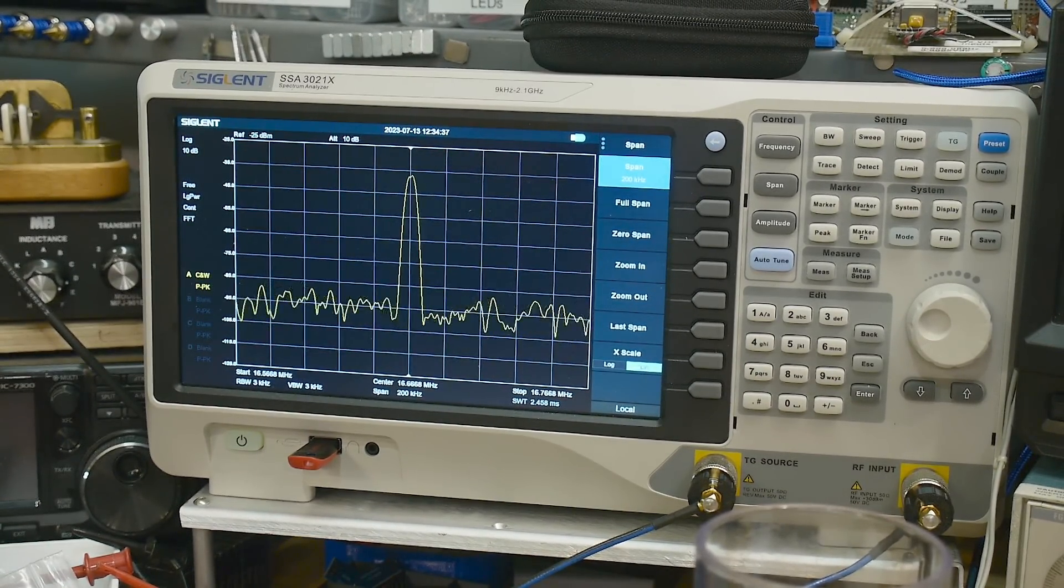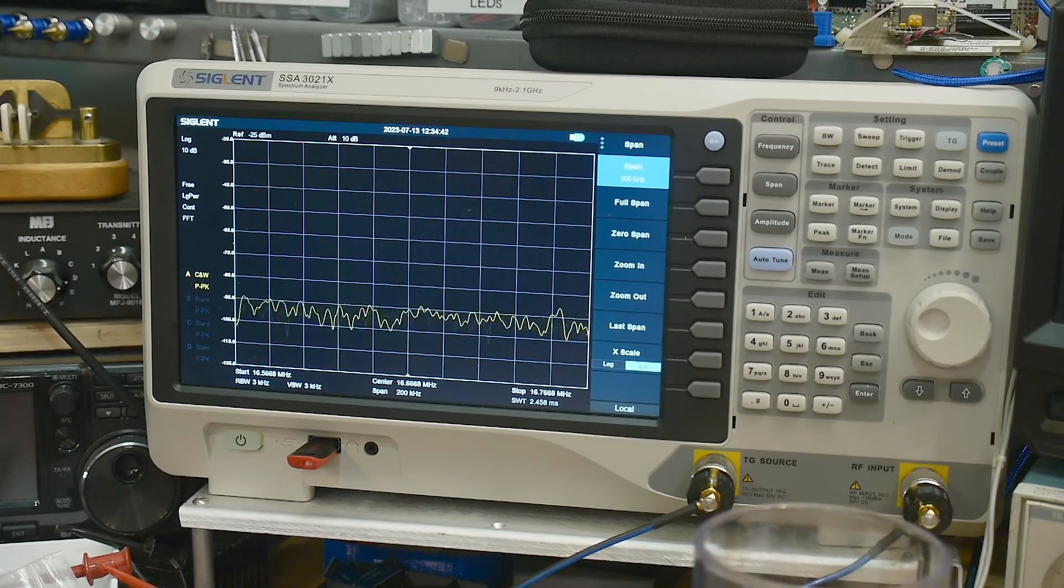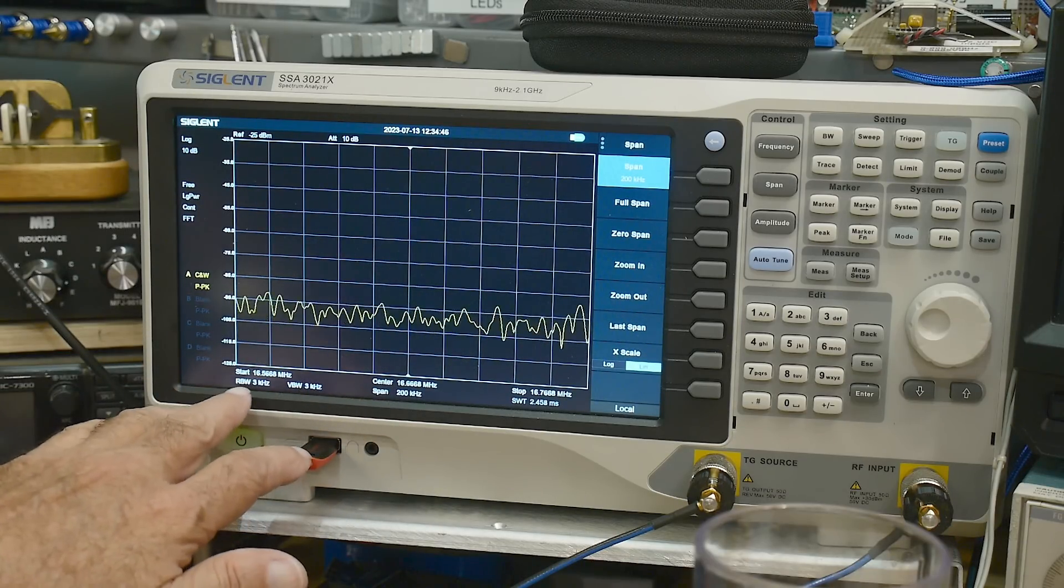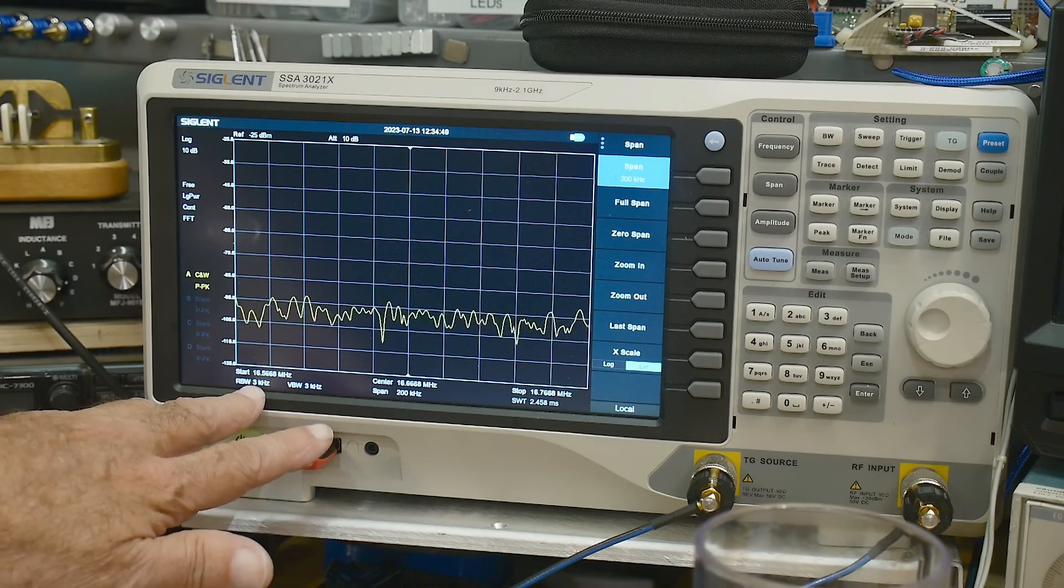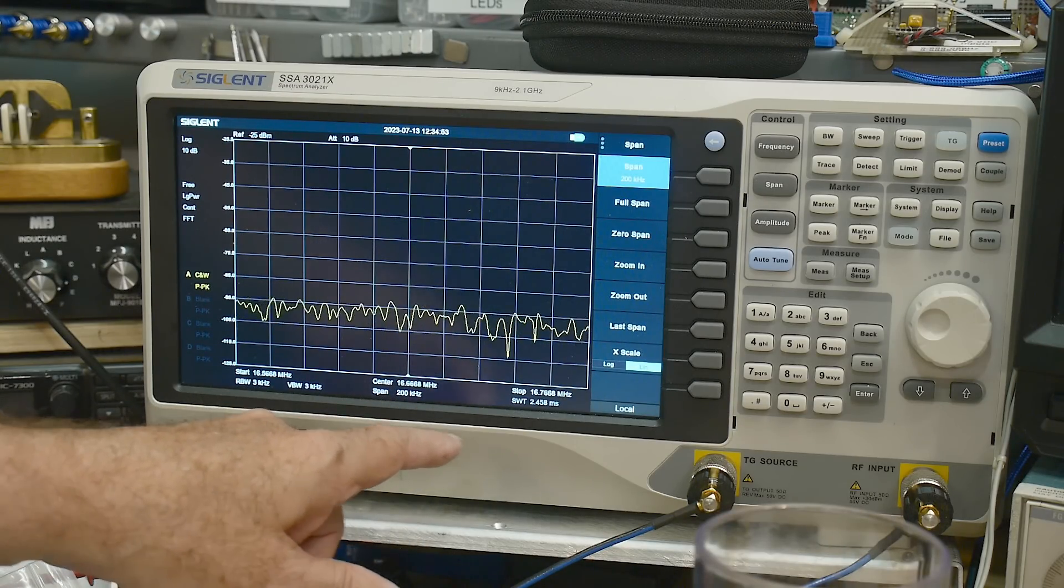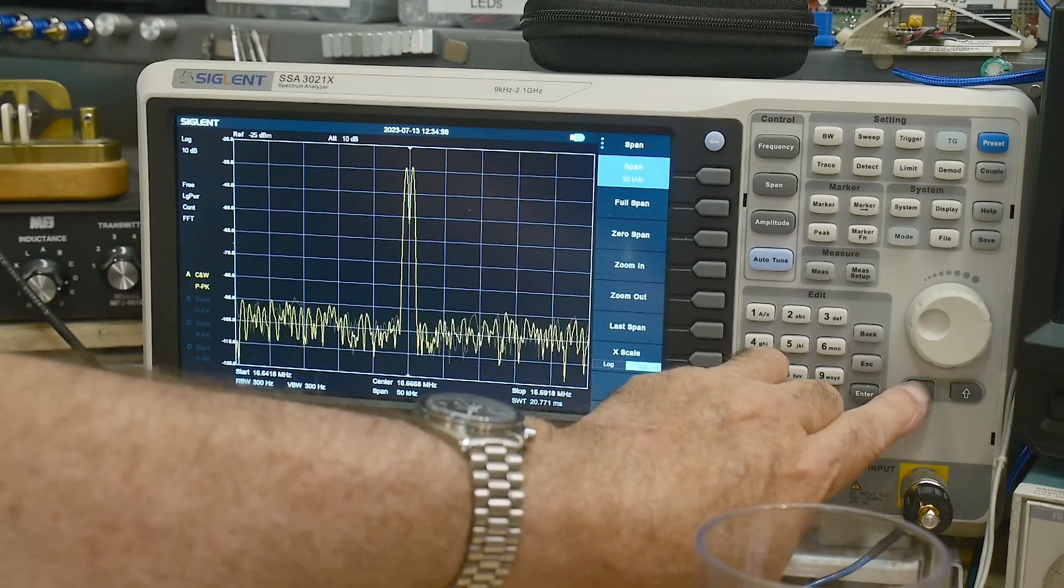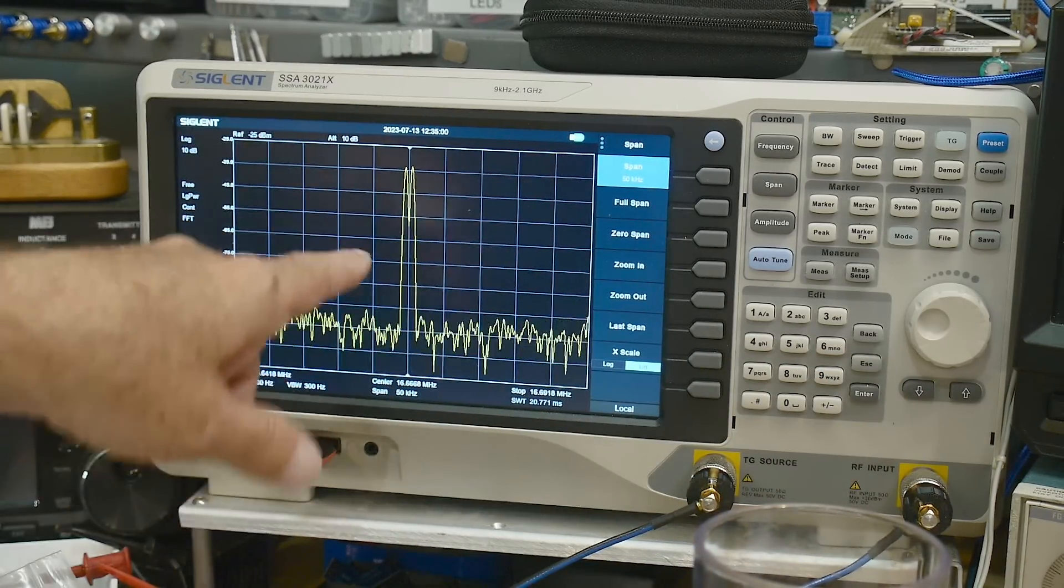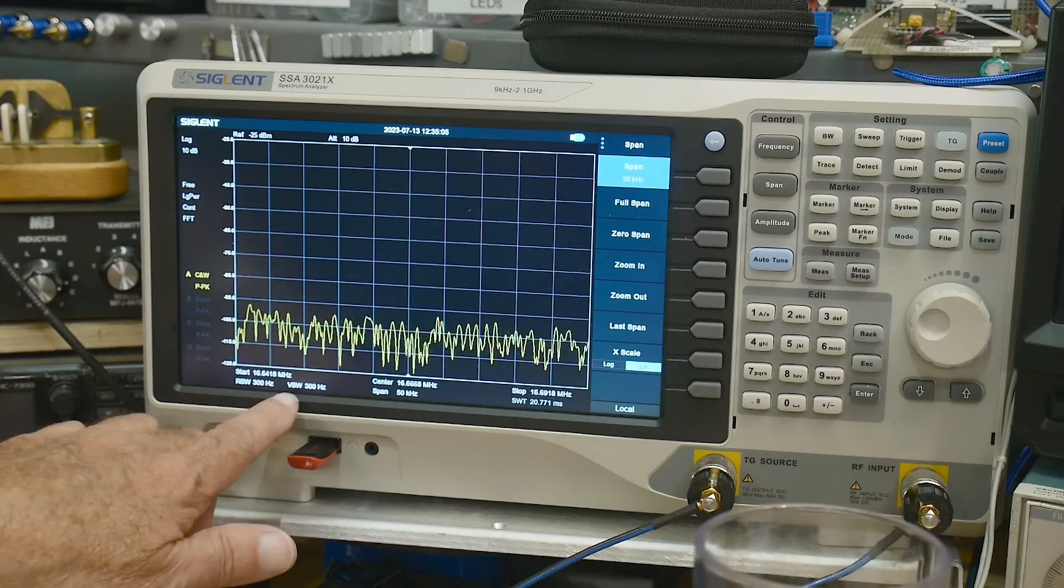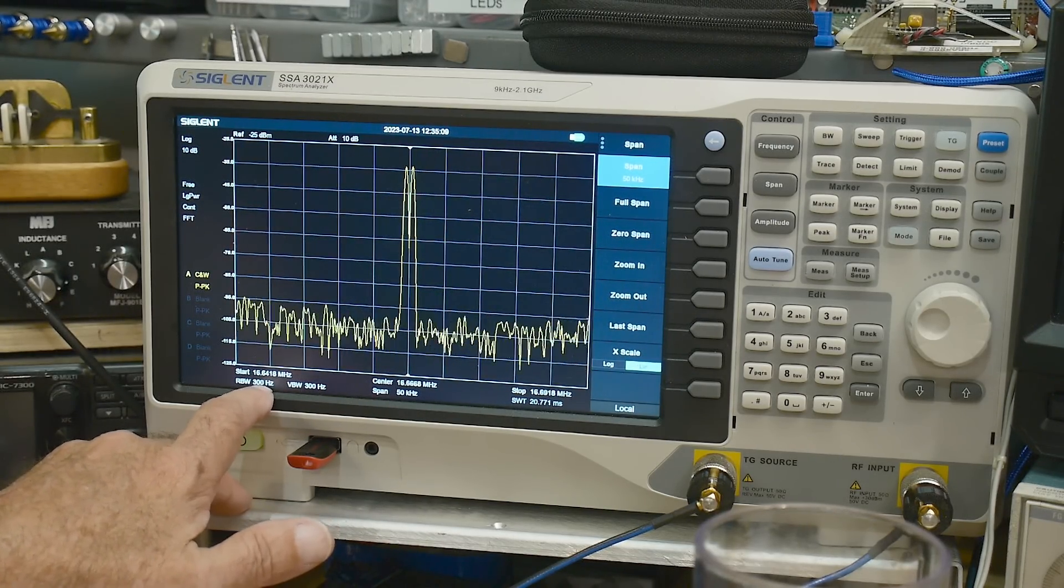So when I push the button, boom, you see a signal and you say, oh well, that's not a very good signal. I'm not resolving anything. Well, right now, our resolution bandwidth is 3 kilohertz. So that's not going to be able to see anything. So I have the center at 16.666. And then if I hit the span button, I can zoom in on it. And there, I'm just starting to resolve it. You can see that I now have two peaks instead of one peak. And that's happening when I have a resolution bandwidth of 300 hertz. And that'd be about right. 300 hertz to resolve 1 kilohertz.